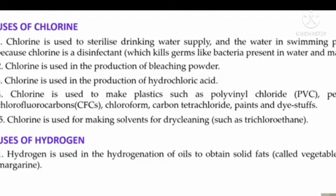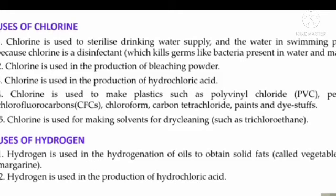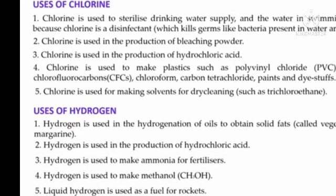Uses of hydrogen: Hydrogen is used in the hydrogenation of oils to obtain solid fats called vegetable ghee or margarine. It is used in the production of hydrochloric acid, to make ammonia for fertilizers, to make methanol CH3OH, and liquid hydrogen is used as a fuel for rockets.